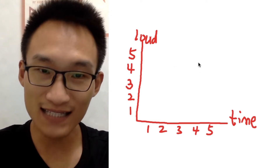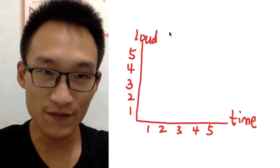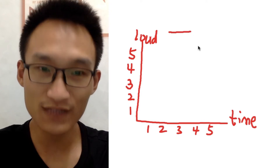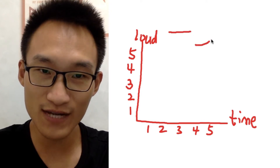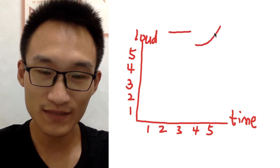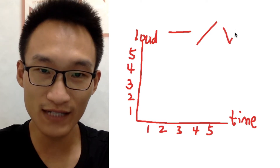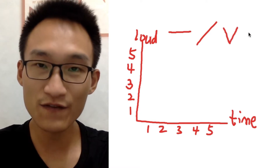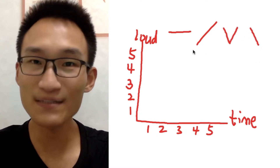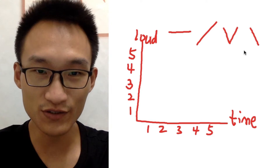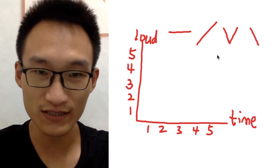Chinese tones — I think most of you know them. The first tone is flat, the second tone is rising, the third tone is falling and rising, the fourth tone is falling. I think most of you know this. But this is not the whole truth.